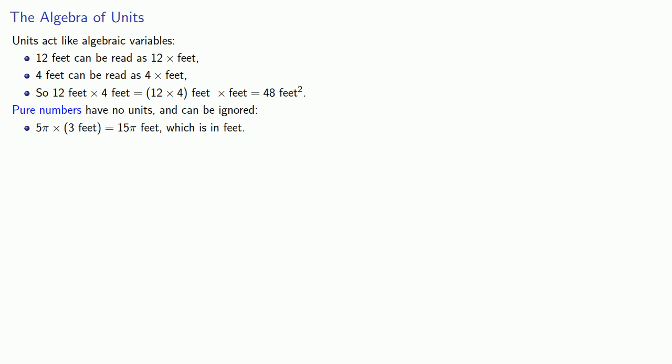And likewise, something like square root of 2 times 2 meters times 4 meters will multiply our numbers together. That's going to give us 8 square root 2. And multiply the units together. Meters times meters gives us square meters.